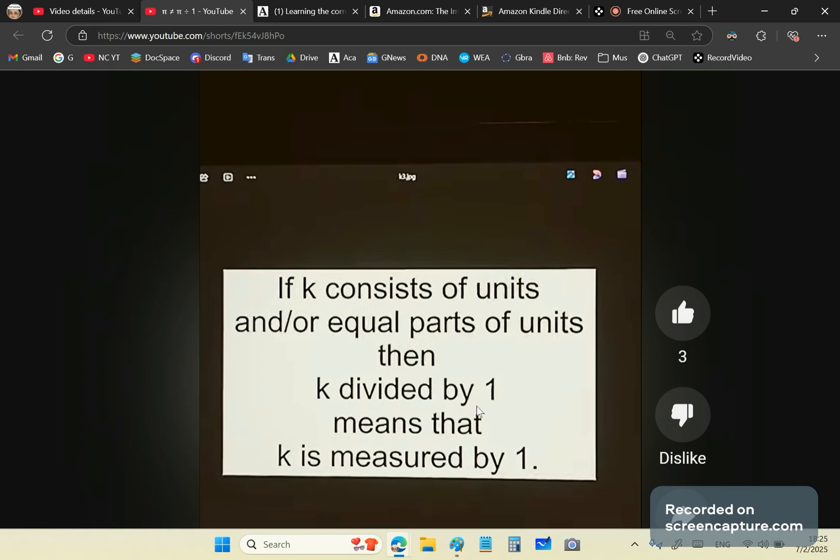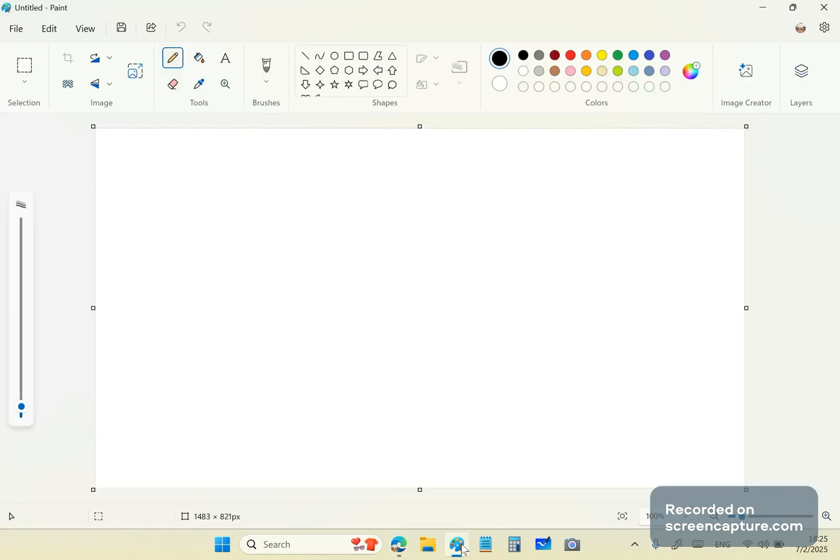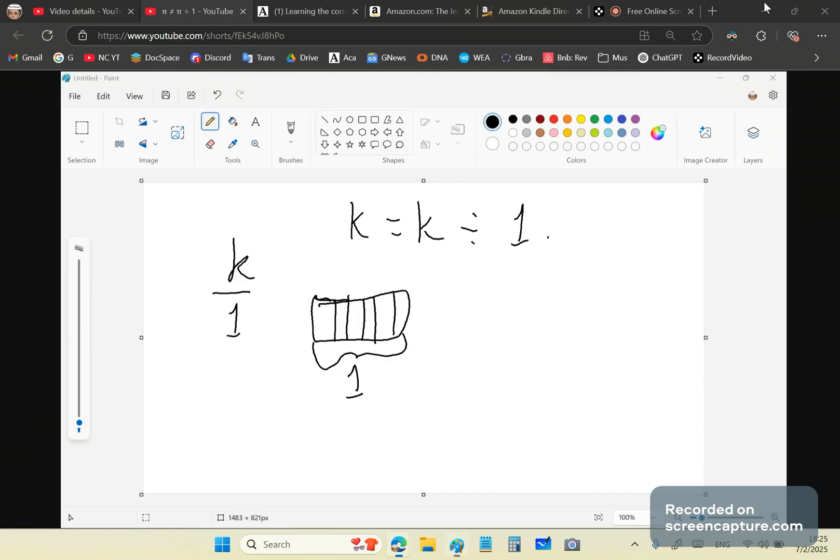K divided by one means that k is measured by one. It's not shared equally amongst one. There's nothing to share, you morons. The only time that k is equal to k divided by one is if k over one can be measured by one and or equal parts of one. Stop the video and think about that.